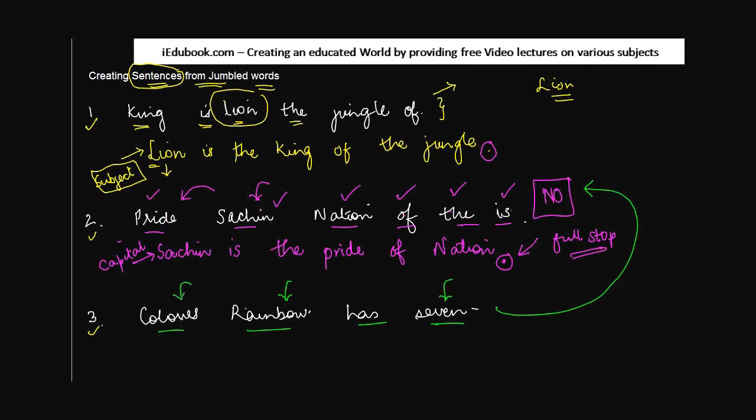So we will just rewrite it accordingly. Rainbow, again capital R, has - we tick this word - seven colors. We end this with a full stop. So rainbow has seven colors. The sentence is complete, it is making complete sense, it has ended with a full stop, it has started with a capital letter.